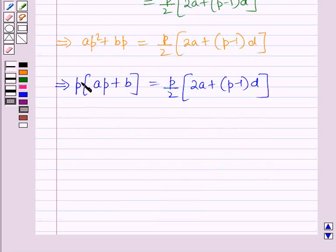Now here p will be cancelled with p. So this implies, on first multiplying, 2ap plus 2b equals 2a plus p minus 1 the whole into d.